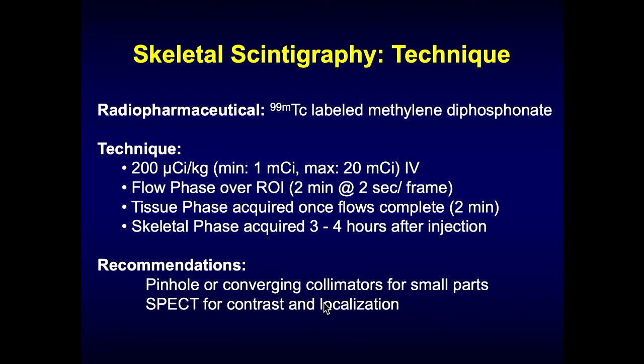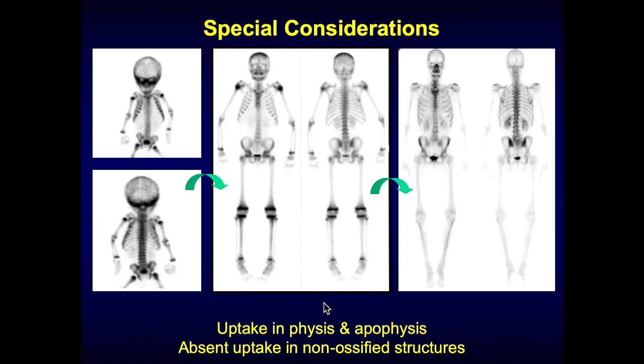You can use pinhole or converging collimators, which are very helpful in pediatrics or for small parts. SPECT is very helpful for both increasing contrast and localization — SPECT alone increases contrast about 20 times over planar images. So if you really need to see something, it can be very helpful. Something I have become more and more of a fan of, if you have access to it, is SPECT-CT.